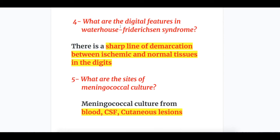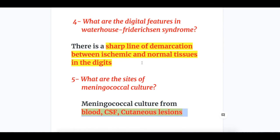Question four — digital features in Waterhouse-Friderichsen syndrome: there is a sharp line of demarcation between ischemic or necrotic and normal tissue in the digits. Question five — sites of meningococcal culture: cultures may be done from blood, CSF, and cutaneous lesions.